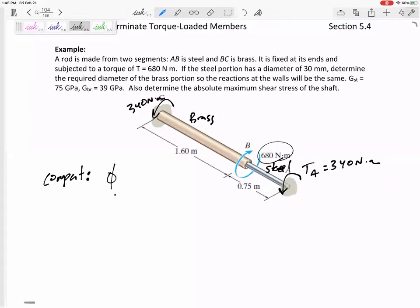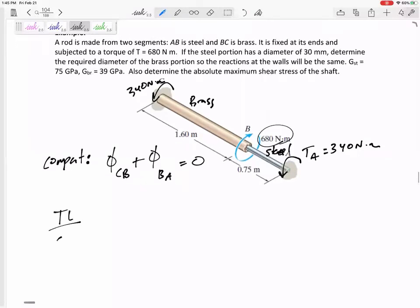So the angle of twist of section CB plus the angle of twist of section BA is going to need to add up to zero. The TL over GJ of that section, the TL over GJ of that section is going to add up to zero.